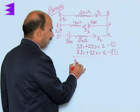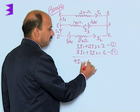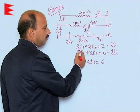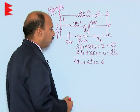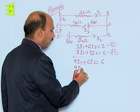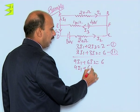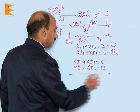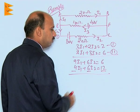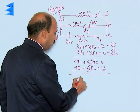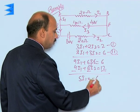We can write here 9 I1 plus 6 I2 is equal to 6, we have multiplied 3 in equation 1. In equation 2 we can multiply 2, that is 4 I1 plus 6 I2 is equal to 12. Now we can solve it - subtracting, this will get cancelled. We can get here 5 I1 is equal to minus 6.